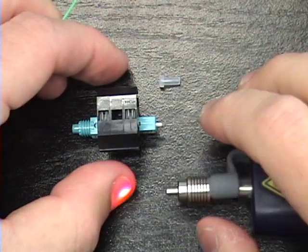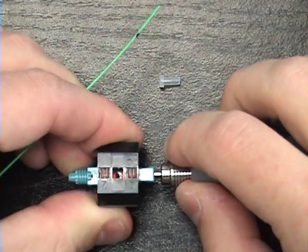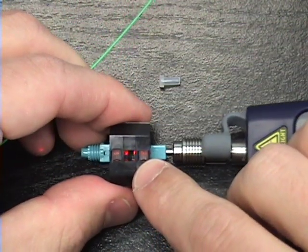As an option, you may use a visual fault identifier to put a red glow into the wedge clip of the connector.